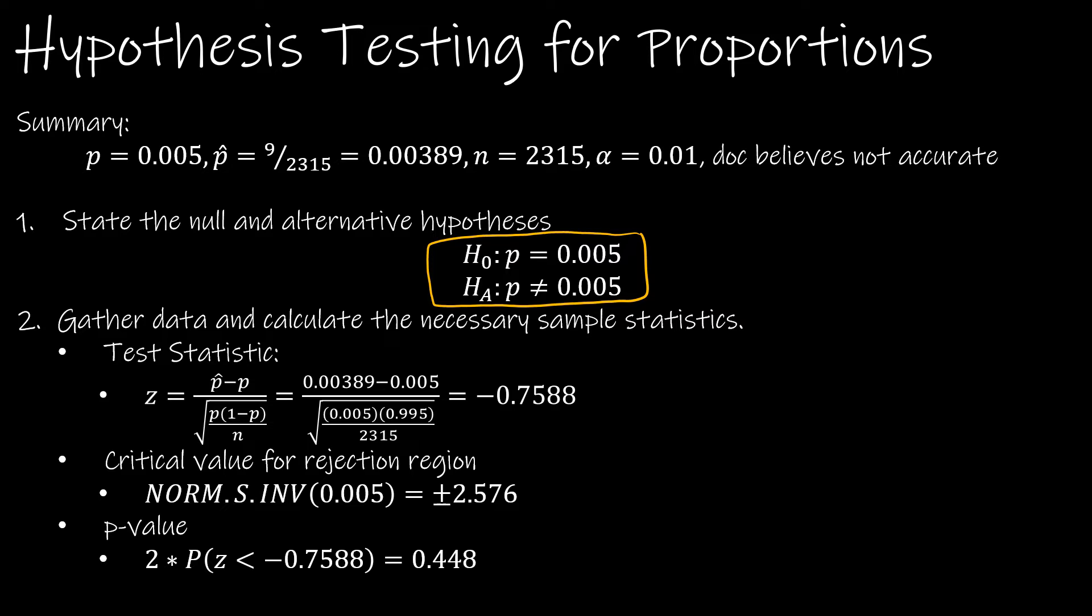Keep in mind that P-hat was found this time by dividing 9 by 2,315. And when you're doing these calculations, I encourage you to not use some rounded value but to use the exact value, whether you're using a calculator or Excel. And I find a z-score of negative 0.7588.